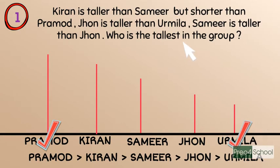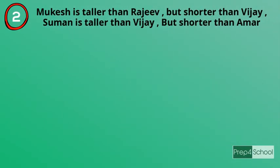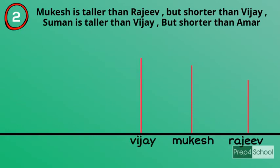Let's take another problem: Mukesh is taller than Rajiv but shorter than Vijay. Suman is taller than Vijay but shorter than Amar. Taking each sentence — Mukesh is taller than Rajiv, so Mukesh has more height than Rajiv. But Mukesh is shorter than Vijay, which means Vijay has more height than Mukesh.